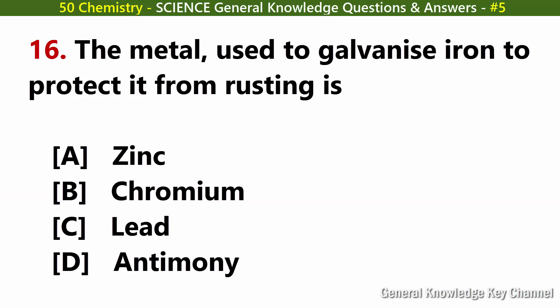The metal used to galvanize iron to protect it from rusting is. Answer A: Zinc.